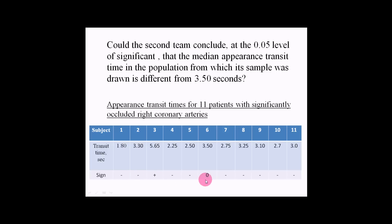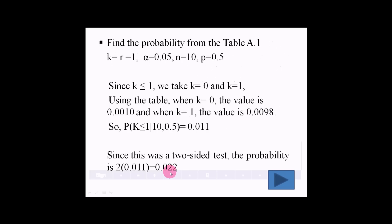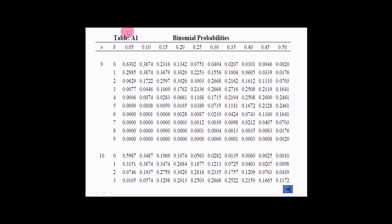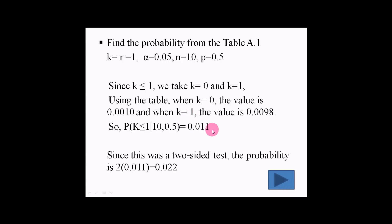From this table, there are 9 minus signs and 1 plus sign. So we find the probability from table A.1 by using k equals r equals 1, alpha equals 0.05, n equals 10, and p equals 0.5. From this table, when n equals 10 and k equals 0, the value is 0.0010; and when k equals 1, the value is 0.0098. So we add up these two values to get 0.011. Since this was a two-sided test, the probability is 2 times 0.011 equals 0.022.